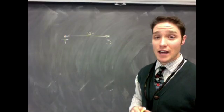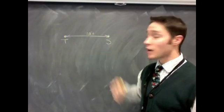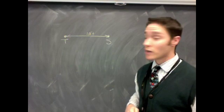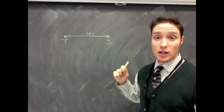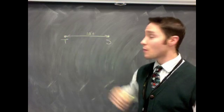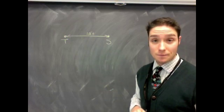Alright, so the problem says that a tree and a statue are 10 feet apart from each other. So I drew that with two dots representing the tree and the statue and a line segment representing the 10 feet between them.